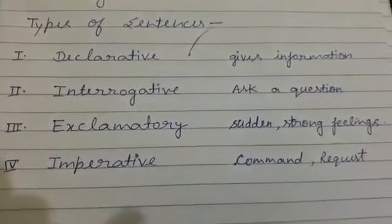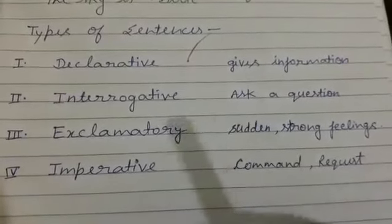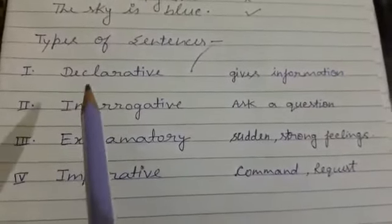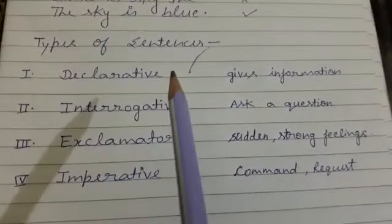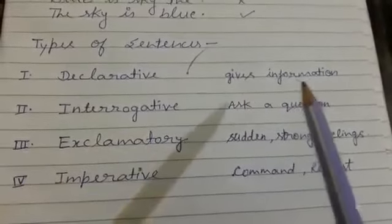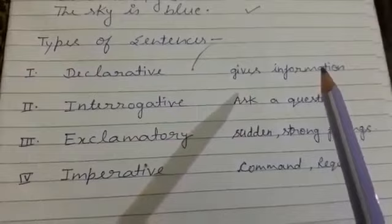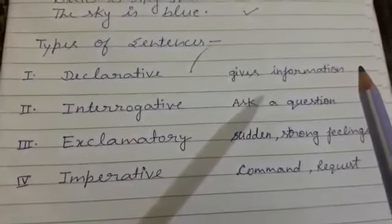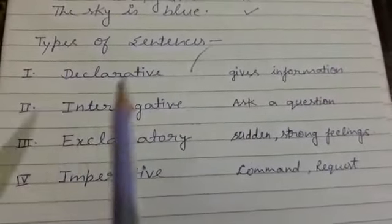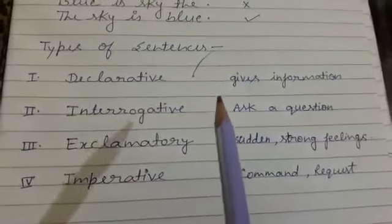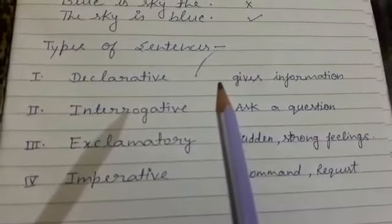I will explain these types. The first type is declarative sentences. Declarative sentences give information about things, either the place or the person.